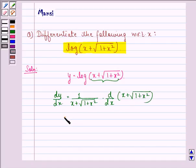This is 1/(x + √(1+x²)) times [1 + derivative of √(1+x²)]. The derivative of x is 1, and the derivative of √(1+x²) is 2x/(2√(1+x²)).